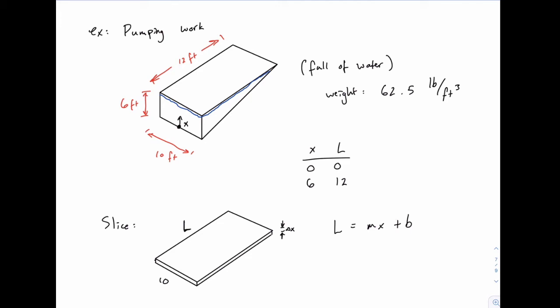And then for the slope, we just need to find the difference in L divided by the difference in x. The difference between the two L values is 12. The difference between the two x values is six. So that works out to two when we simplify it. So very simply, L just equals 2x.